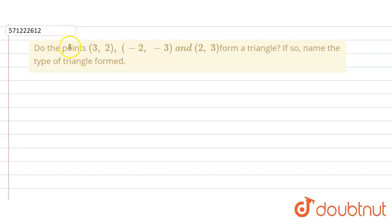In the given question: do the points (3, 2), (-2, -3) and (2, 3) form a triangle, and if so, name the type of triangle formed.